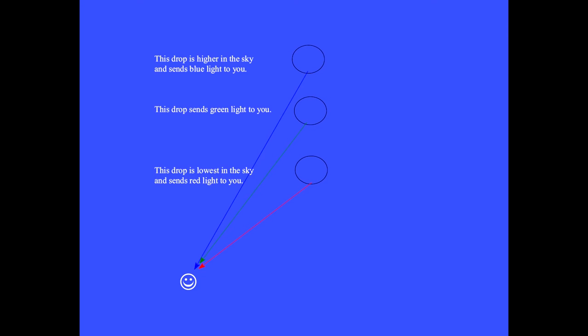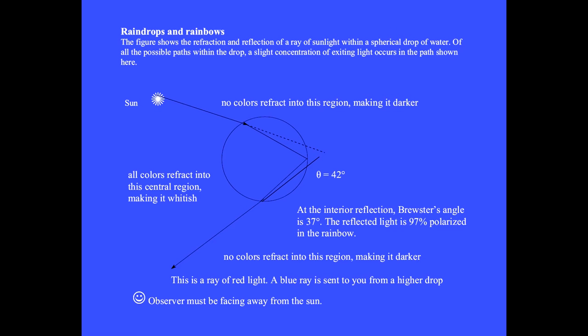If you try to move toward the rainbow, there will no longer be a sufficient number of drops between you and the rainbow, so the rainbow dims and disappears. As sunlight leaves the drop, no colors are being refracted into the region above or below the drops, making this part of the sky a bit darker.